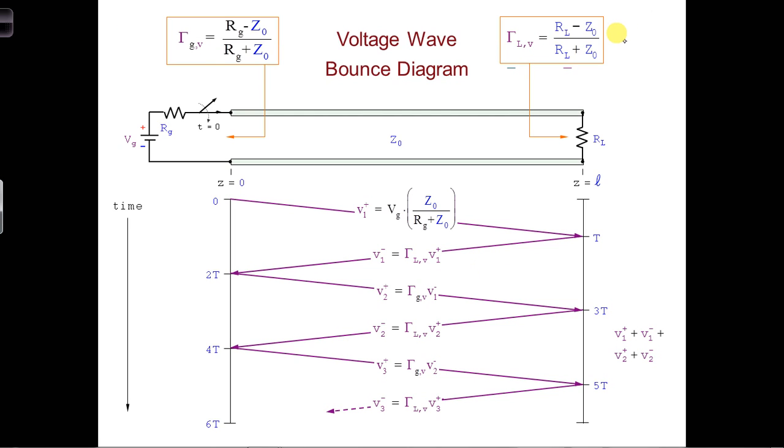We can use our bounce diagram to get the voltage at any position Z over time by seeing which voltage waves intersect that Z position.